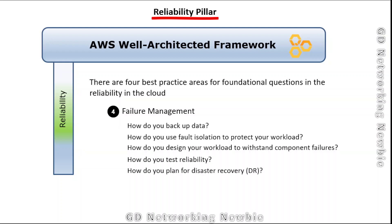Additionally, how do you plan for disaster recovery? We need to address all these questions, and the best practices in the AWS documentation will be very helpful. That's it for the discussion on the reliability pillar — this was a brief overview, but we covered the key design principles and best practice areas for the reliability pillar in the AWS Well-Architected Framework. Thank you for your time, and hope to see you in another video.